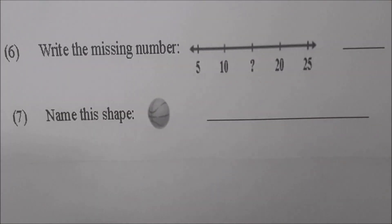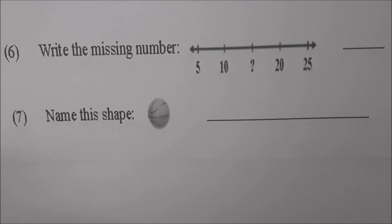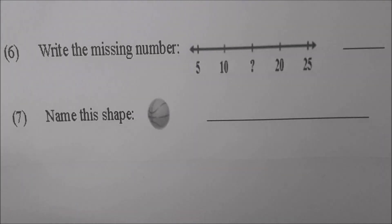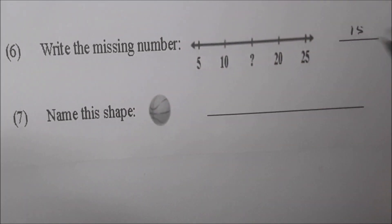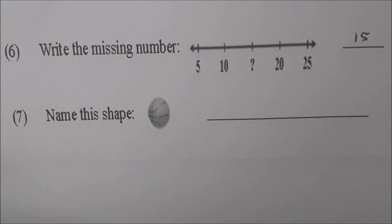Okay Sky, read number six. Write the missing number. We have a number line and the numbers are five, ten, the missing number, and then twenty and twenty-five. What's the missing number, Sky? Fifteen. Why? How do you know it's fifteen? Because we're counting by fives. Very good. Put the answer on the line. Fifteen.